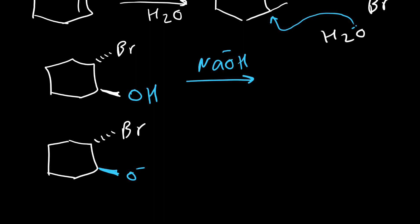Then we have this intermediate, and this intermediate because oxygen and bromine are on two different sides of the molecule, it has a chance to perform an SN2 reaction that we know as Williamson ether synthesis.